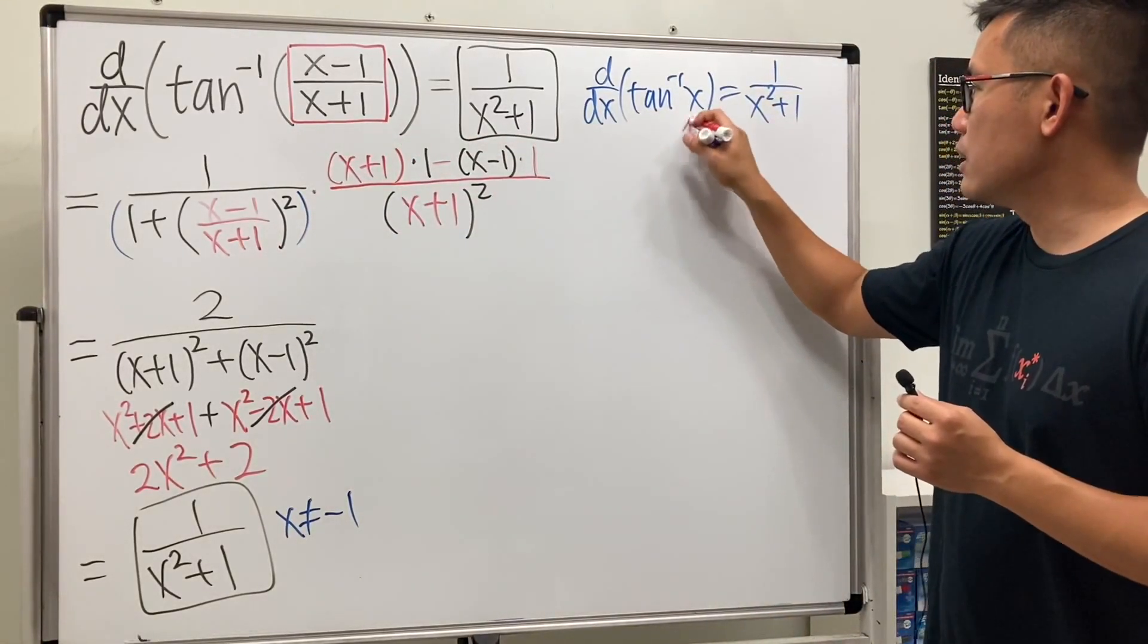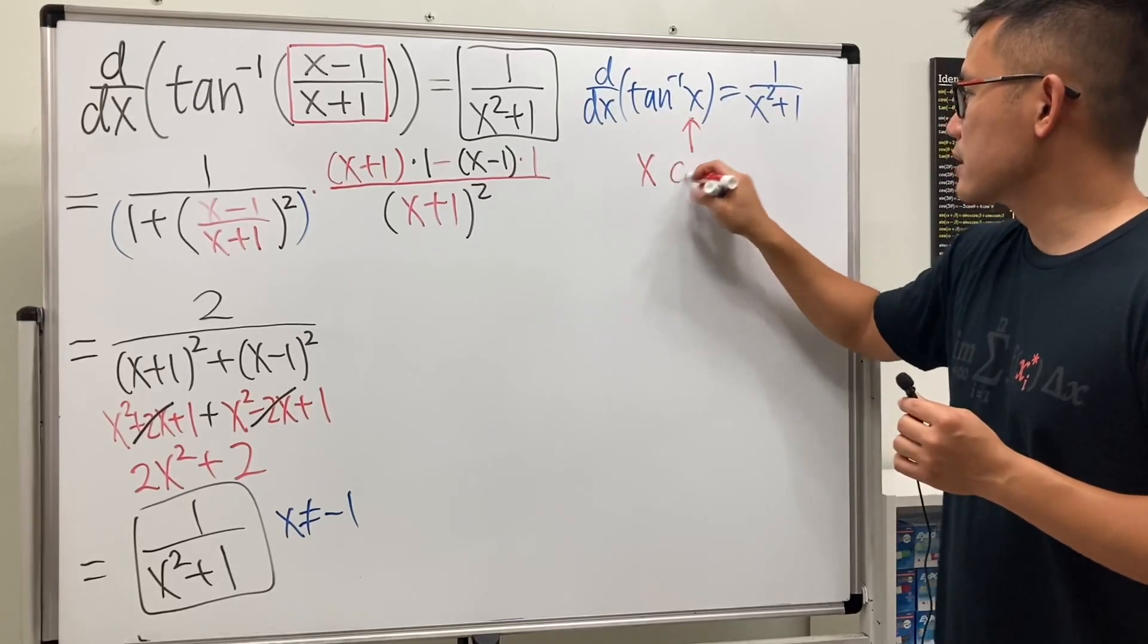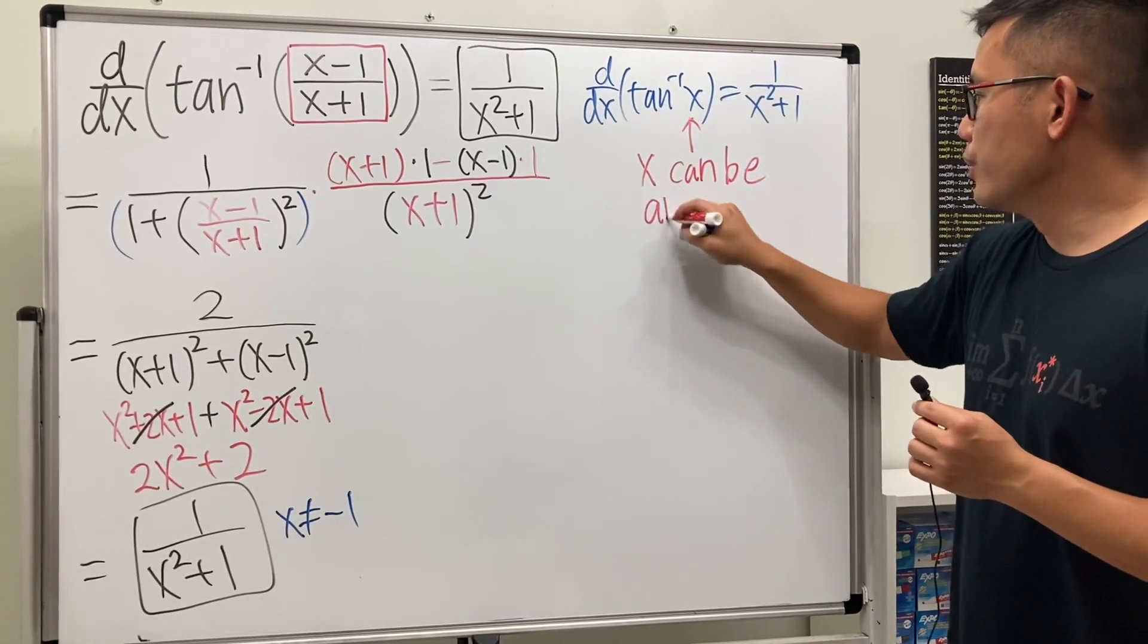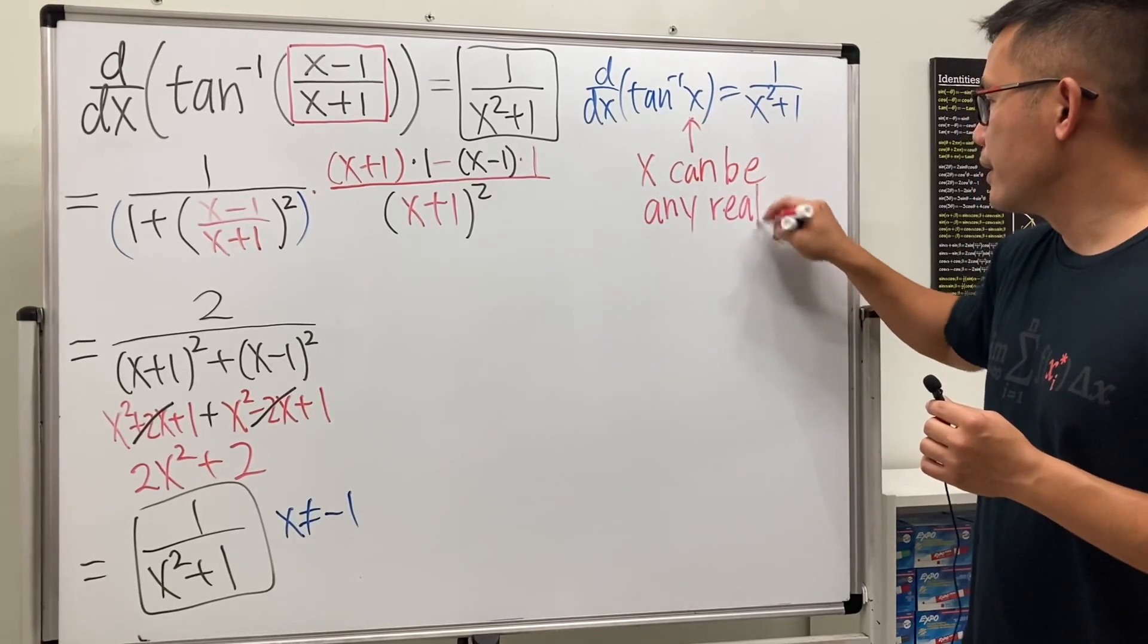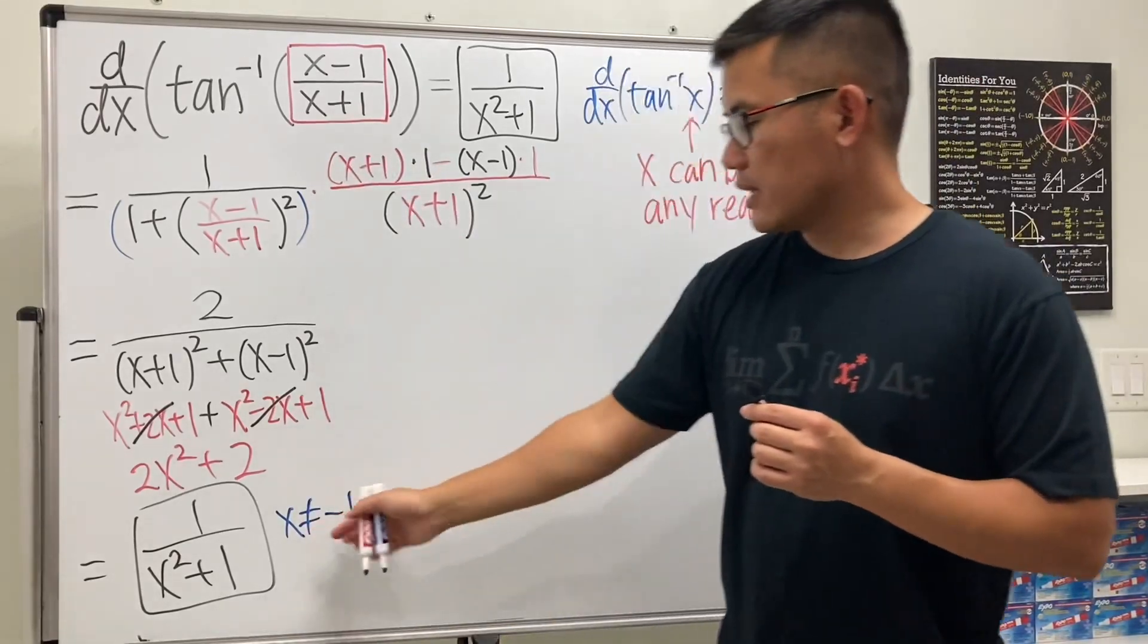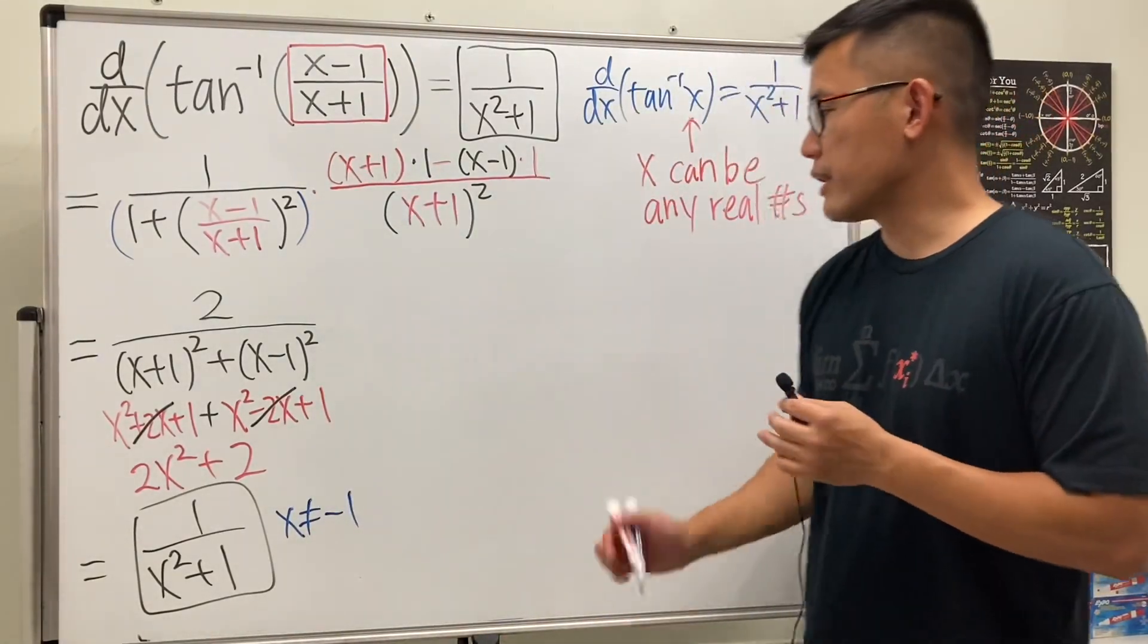So, again, let me just write this down here. This right here, I'll just say x can be any real numbers. But, here, x cannot be equal to negative 1. So, that's the big difference.